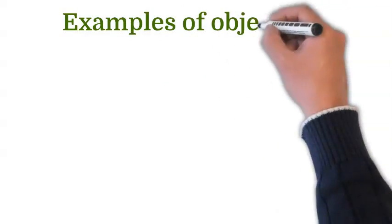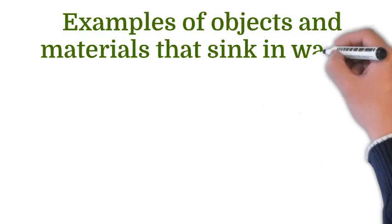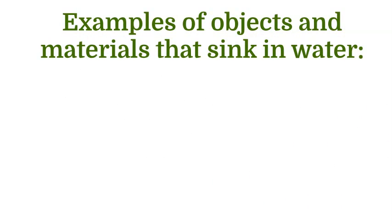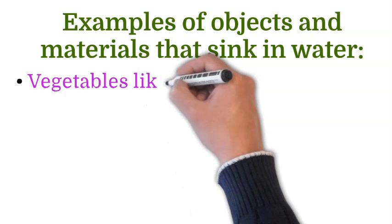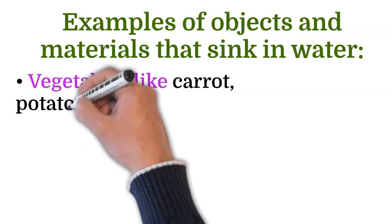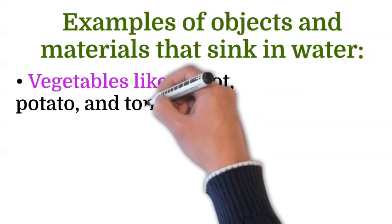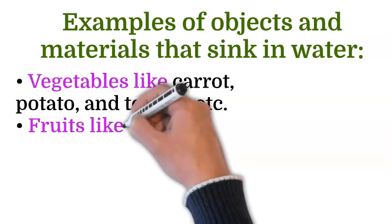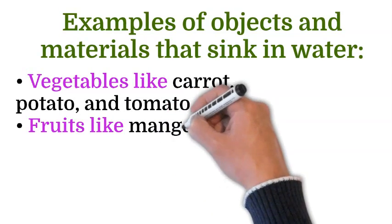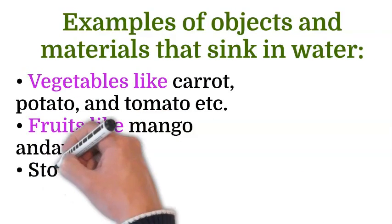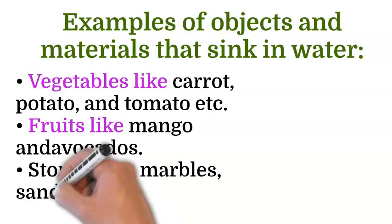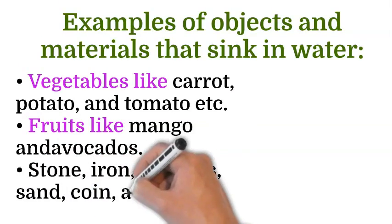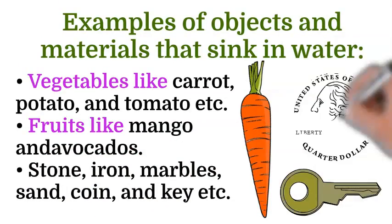Examples of objects and materials that sink in water are: vegetables like carrot, potato, and tomato, etc.; fruits like mango and avocados; stone, iron, marbles, sand, coin, and key, etc.